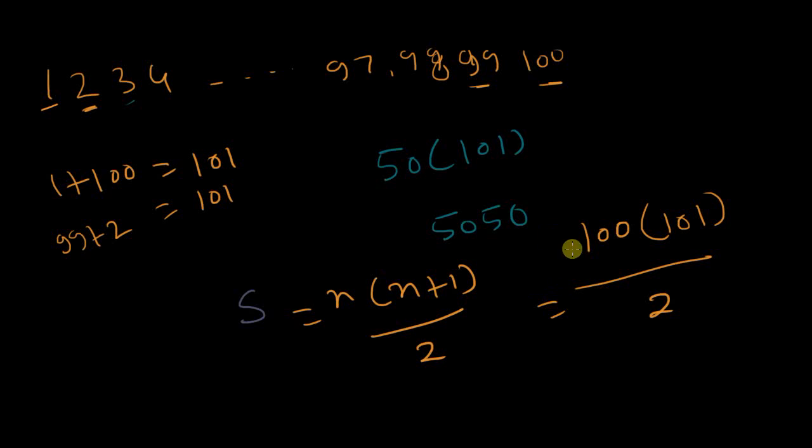This is the Gauss arithmetic method. By using the same formula, n times (n plus 1) divided by 2, you can add any number sequence.